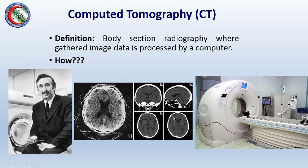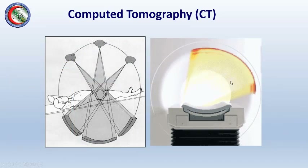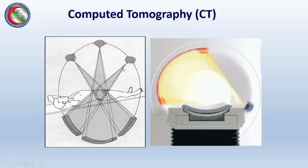Moving on to our third modality: CT scanners, first invented in 1971 by Sir Godfrey Hounsfield. The CT machine is essentially an X-ray machine with a special configuration where the X-ray tube rotates around the body. Opposite it is a detector arc. The tube takes multiple images from different angles, which are sent to a special computer that reconstructs them into a cross-sectional X-ray image of the body.